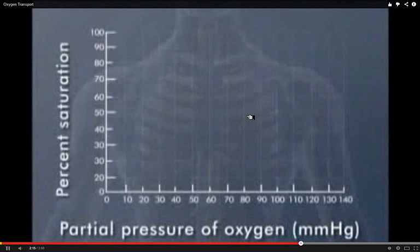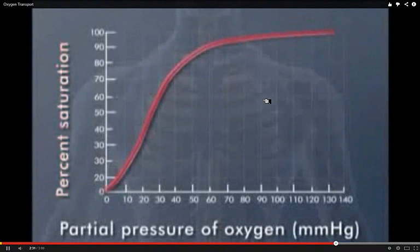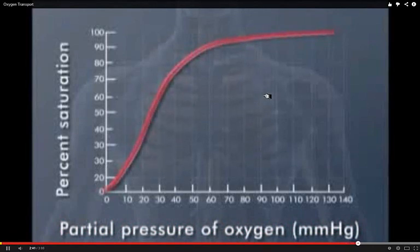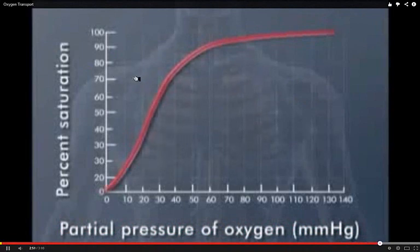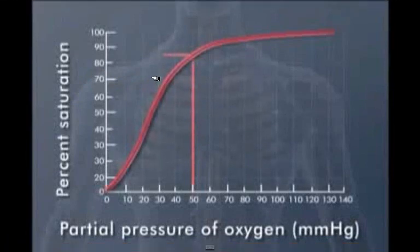The oxygen dissociation curve of hemoglobin demonstrates the relationship between the oxygen carried in combination with hemoglobin — the O2 saturation — and the partial pressure of oxygen in the arterial blood. The sharp upstroke and flat plateau illustrate how oxygen is released to the tissues over a wide range of conditions. Although the partial pressure of oxygen in the blood may be reduced to only 50% of normal — say, due to lung disease or high altitude — hemoglobin will still be 85% saturated with oxygen.